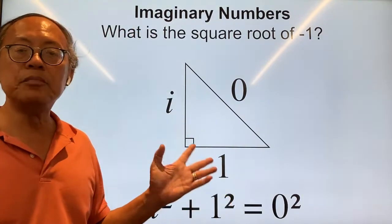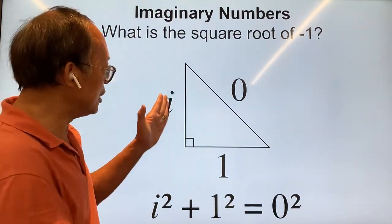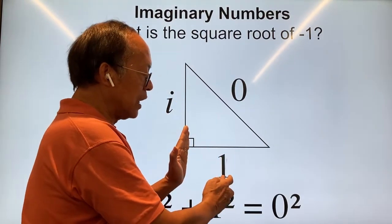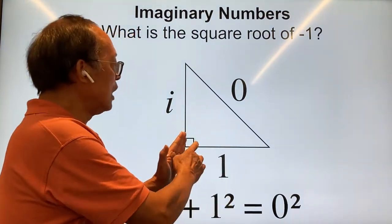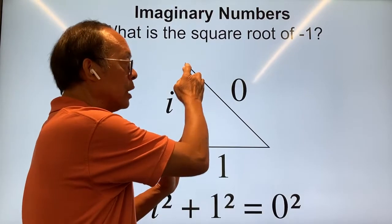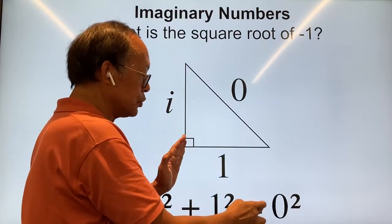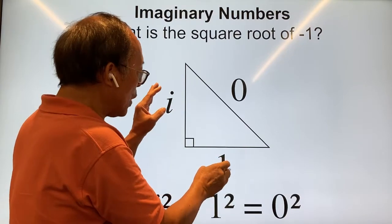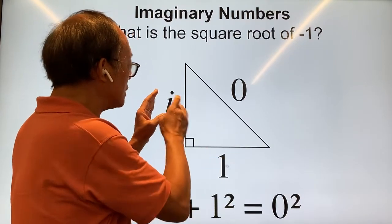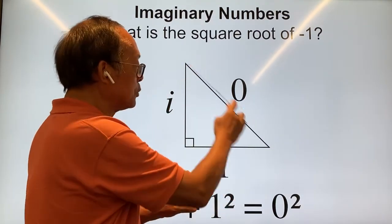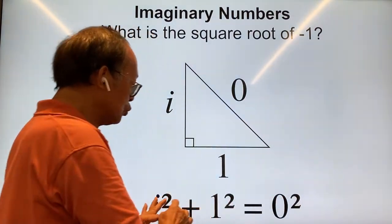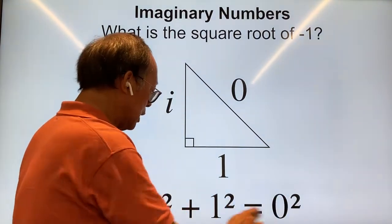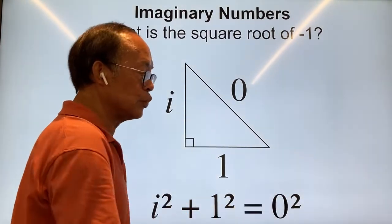So what are imaginary numbers? If you think about a triangle where one side is of length one and the other side is of length i — the imaginary number equal to the square root of minus one — then you add up one squared plus i squared, and that adds up to a length of zero. The solution is i squared equals minus one, and therefore i is the square root of minus one.